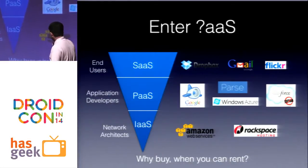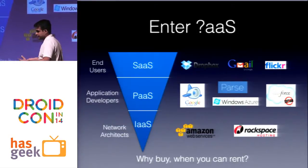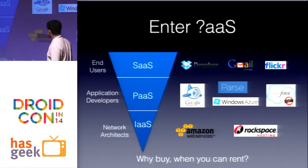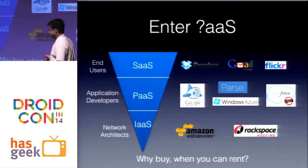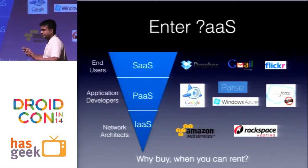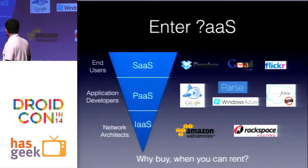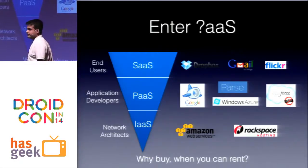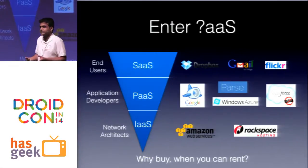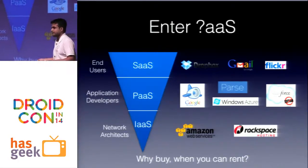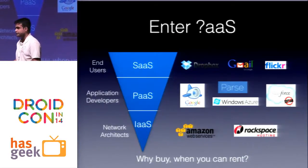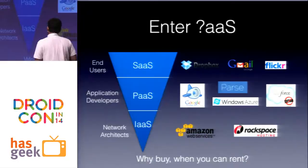Looking at cloud services, the industry standard segments them into two or three categories. First is Infrastructure as a Service, which is raw processing power — Amazon Web Services and Rackspace are examples. You can reserve instances on an hourly or monthly basis.